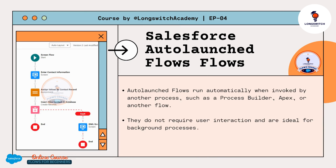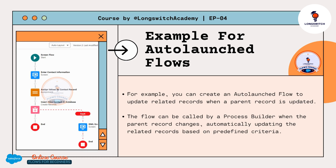Auto Launched Flows run automatically when invoked by another process, such as a Process Builder, Apex, or another flow. They do not require user interaction and are ideal for background processes. For example, you can create an Auto Launched Flow to update related records when a parent record is updated. The flow can be called by a Process Builder when the parent record changes, automatically updating the related records based on predefined criteria.